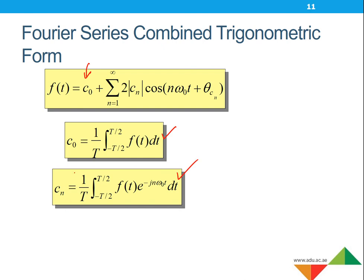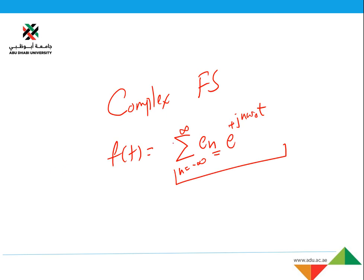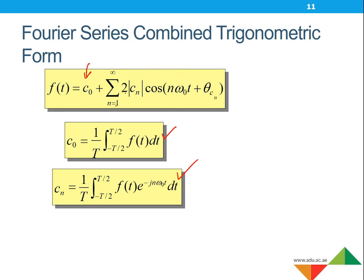The nth component coefficient value. In the combined trigonometric form, we start from positive values: n is equal to 1 to infinity. In the complex form, we take values from minus infinity to infinity, but here we take only 1 to infinity. So we have 2 times the magnitude of c_n, cosine of n*omega_0*t plus theta of c_n.